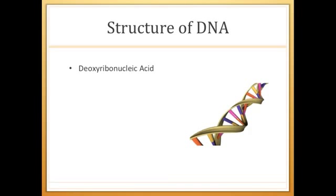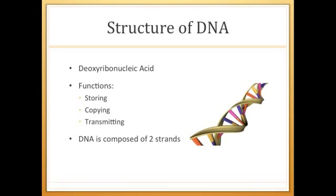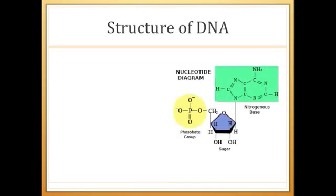DNA, as you know, stands for deoxyribonucleic acid. And its functions involve storing information, genetic information. It can copy itself and it can transmit information from one cell to the next. DNA is a twisted double-stranded structure known as a double helix. If we take DNA apart, we see that it's actually a polymer, meaning that it's made up of smaller repeating units known as a nucleotide.